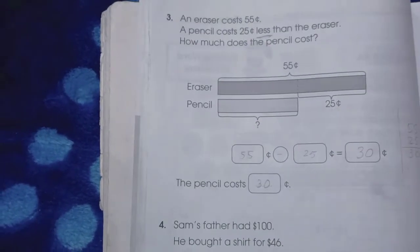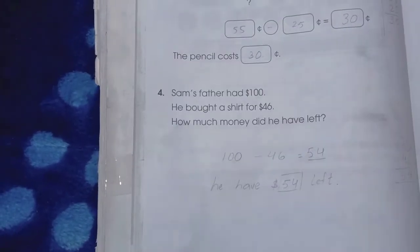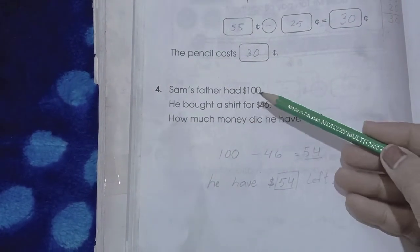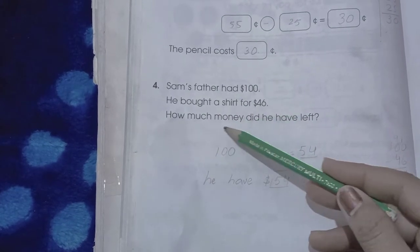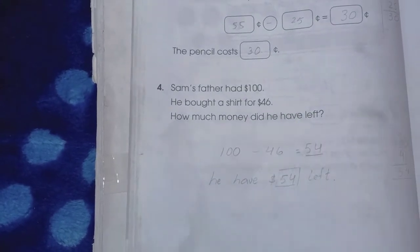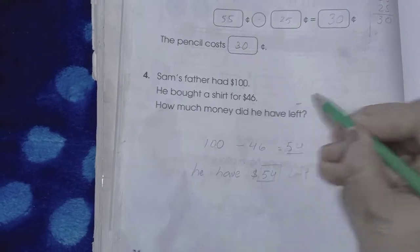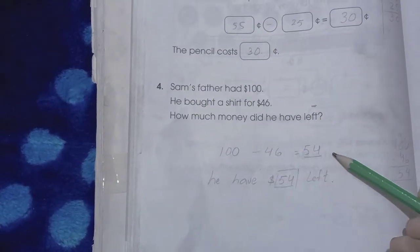Number four: Sam's father had $100. He bought a shirt for $46. How much money did he have left? Again, left means you have to subtract. 100 minus 46 is 54. He has 54 dollars left.